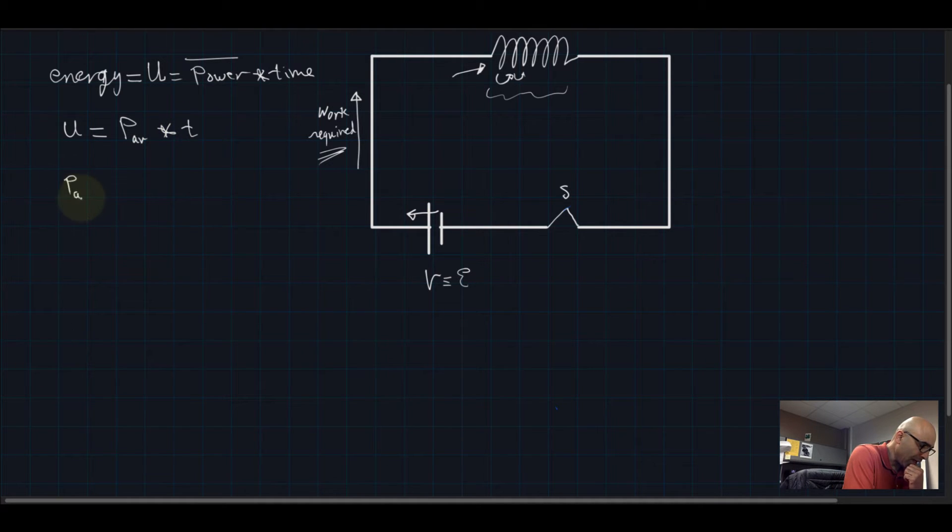P average is equal to I times the back electromotive force, and this is P average because the amount of current is changing throughout the circuit once the switch is closed. So I'm gonna call this I average, and current, if I want to show you, changes from I equals zero to a final value I.